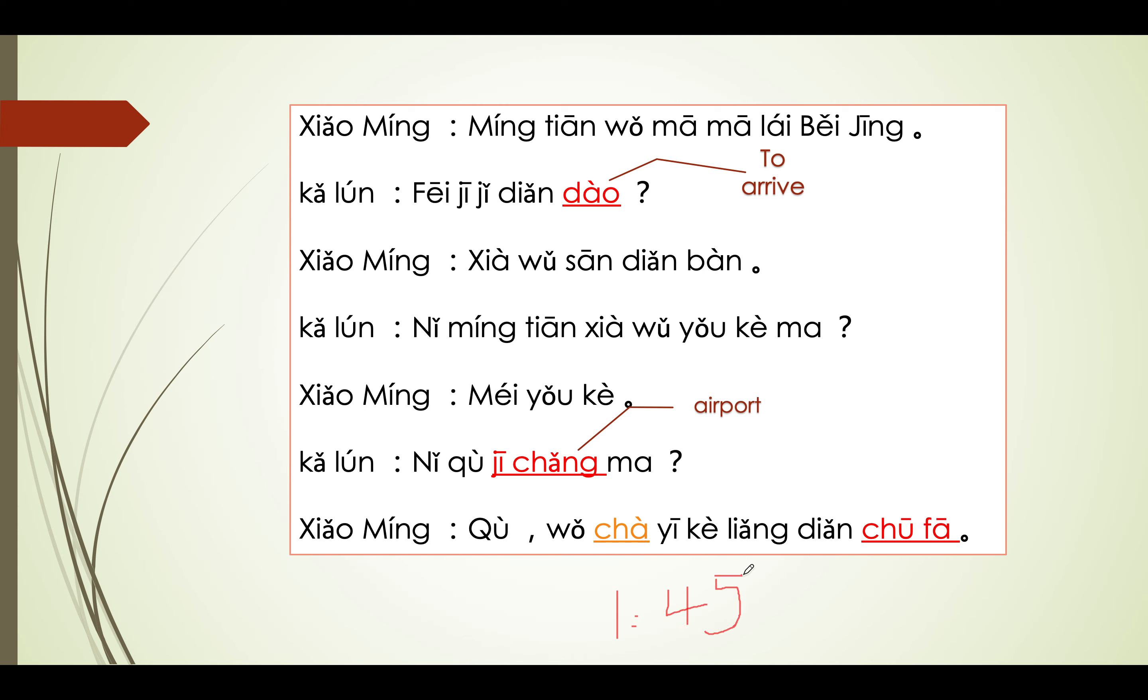So now we learn the dialogue. 明天我妈妈来北京, 小明的妈妈明天来北京, 飞机几点到? 几点飞机到? 下午三点半, 你明天下午有课吗? 小明明天下午有课吗? 没有课。你去机场吗? 去我一点, 差一刻两点出发。After learning this, let's do our homework,